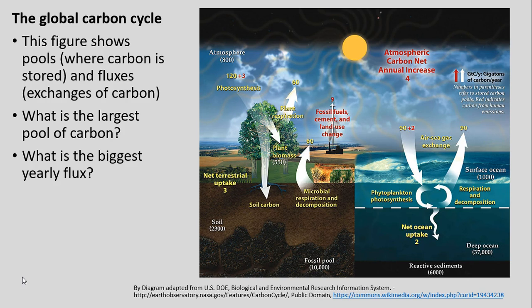We're also tied to a few global cycles we've had some exposure to. This global carbon cycle shows where different pools of carbon are — pools meaning where carbon is stored — and fluxes, where we're having exchange of carbon. I want us to be most familiar with where the biggest pool of carbon is and where the biggest yearly flux of carbon dioxide is within our atmosphere.